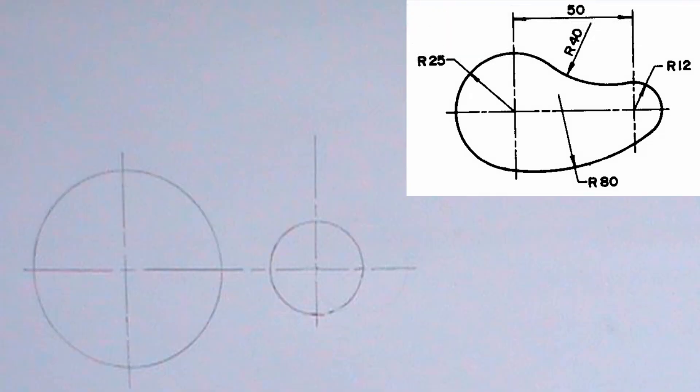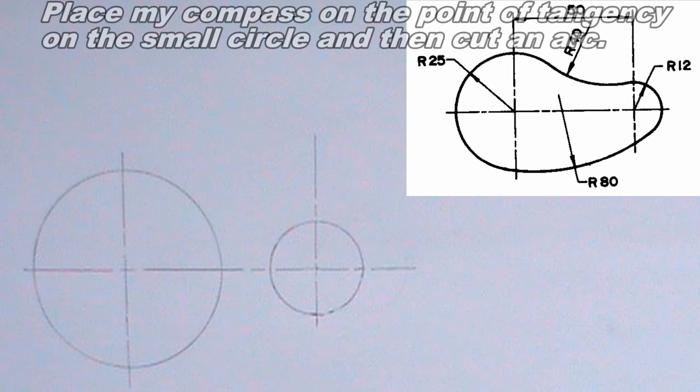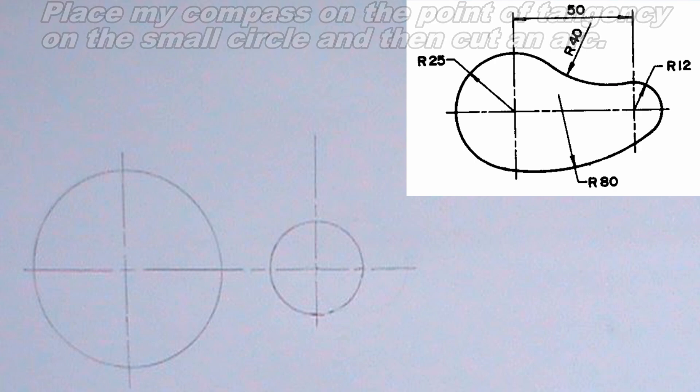Next, I will produce a tangential arc. In order to produce the upper tangential arc, I will place my compass on the point of tangency on the small circle, then I will cut an arc. I will also place my compass on the point of tangency on the bigger circle and also cut an arc. The two arcs should meet at a point. The radius of the arcs should be equal to the radius of the tangential arc you are about to draw. The radius of the arcs should be 40 millimeters.